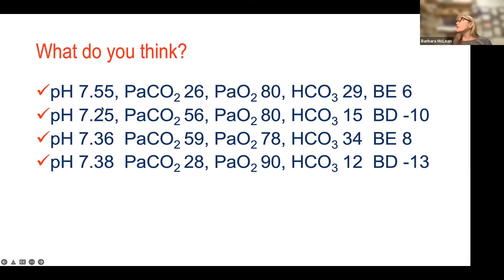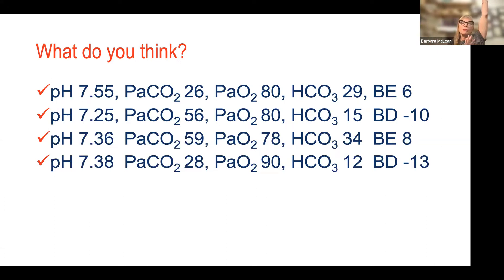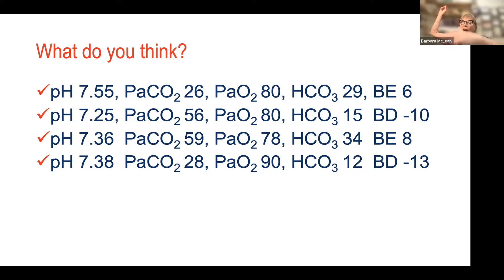Next case: pH 7.25 — acidotic, down and outside range. PACO2 is up and outside range — high CO2, respiratory acid, with an acidotic pH. But that's not the end — look at bicarb. Bicarb is 15: not perfect, down, outside range. Metabolic acid is up. Same with the base deficit — down and outside range. Metabolic acid up, CO2 up: mixed metabolic and respiratory acidosis.